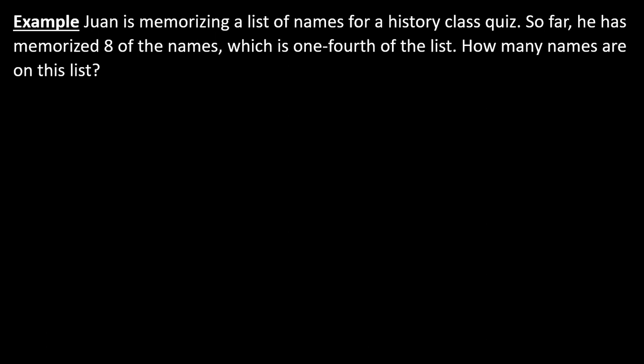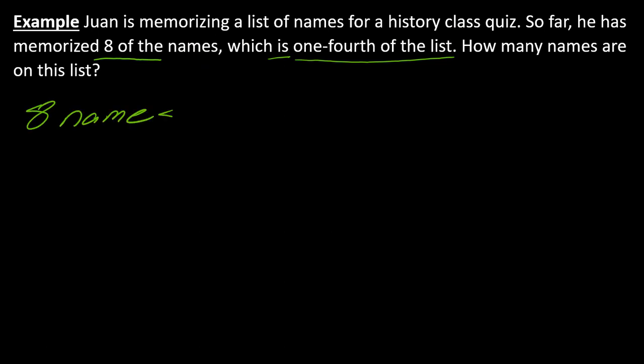So let's start with this first one. Juan is memorizing a list of names for a history class quiz. So far, he has memorized eight of the names, which is one fourth of the list. How many names are on the list? The first thing you want to do is figure out what information is actually relevant. It's telling us that he's memorized eight of the names and that is one fourth of the list. The first thing you want to figure out is where does the equal sign fall. I see the word 'is' here. So if I wanted to summarize: eight names is one fourth of the list.